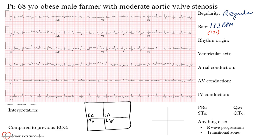Many introductory books — whether it's Dubin's, Thaler's, or others — are quite insufficient. They won't help you approach an EKG, help with patient management, or leave you feeling adequate in real patient care. That's why I've developed this course. The sinus node sits in the right atrium, and from there you have the AV node, Bachmann's bundle going to the left atrium, and the His bundle with right and left bundle branches.